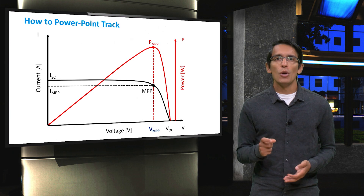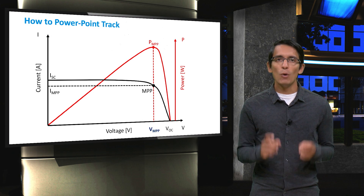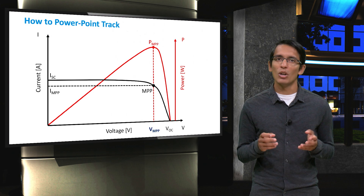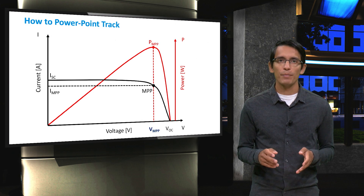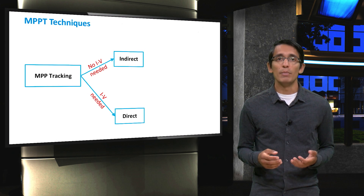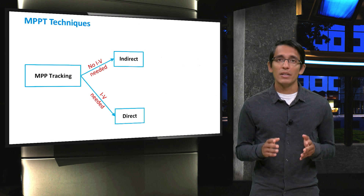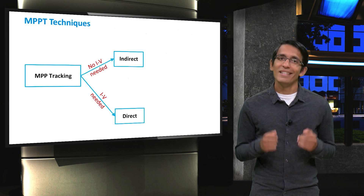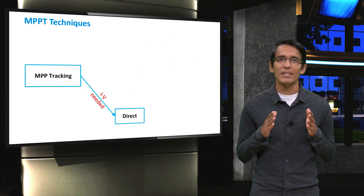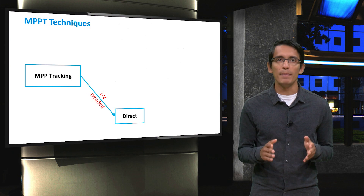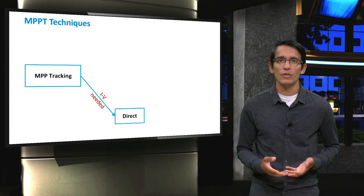By now, you should know that the goal of maximum power point tracking is to find the voltage at which a solar panel or array of solar panels delivers the most power. These techniques can either be indirect or direct. The incremental conductance technique is a direct technique, meaning that it directly scans the PV curve to find the MPP, rather than using some assumptions and calculations to do it.